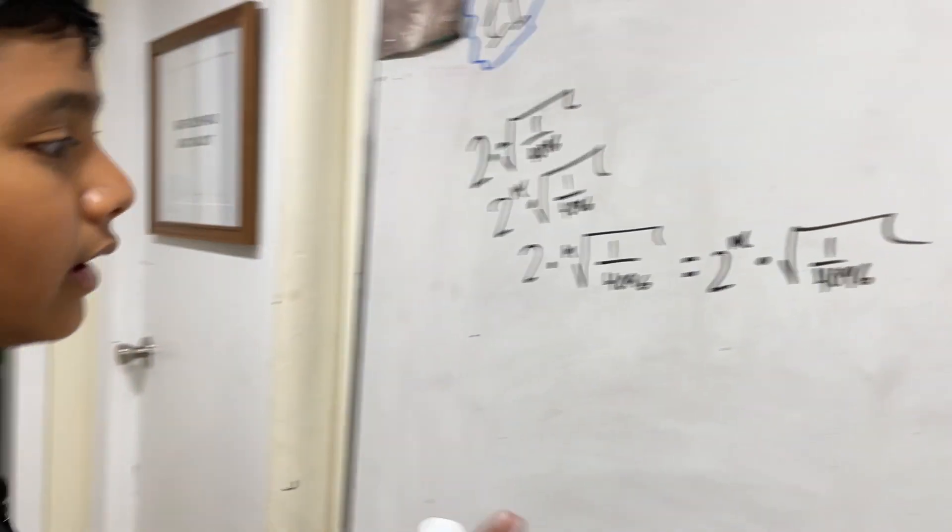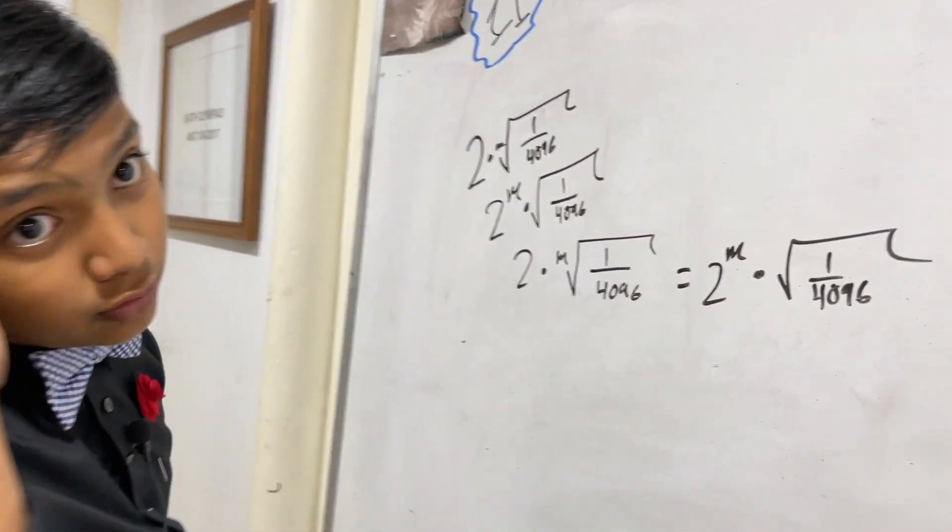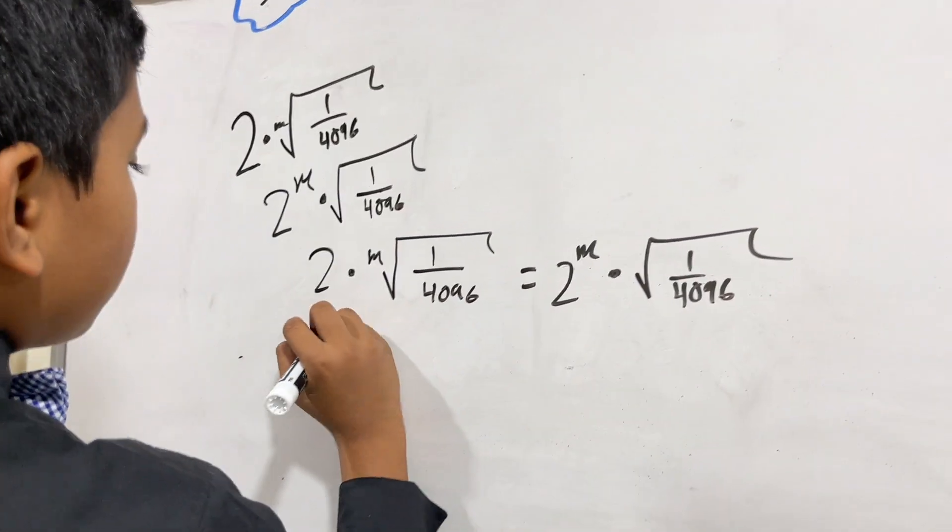Okay, well, let's see this. 4096, if you know your stuff, is 2 to the twelfth power.